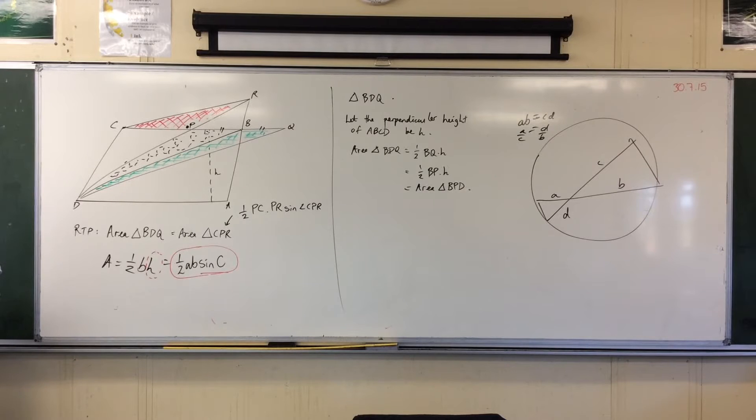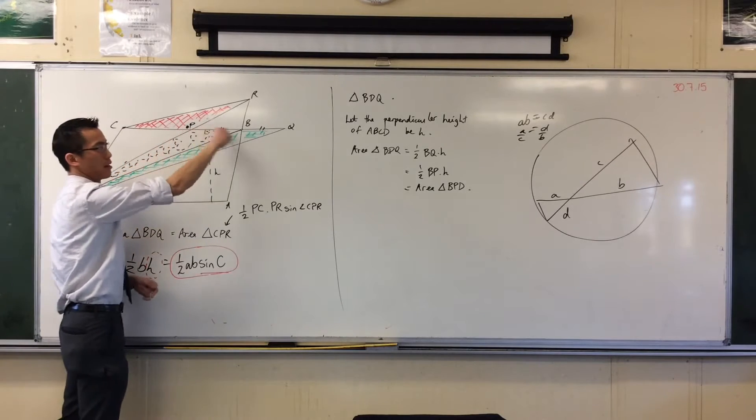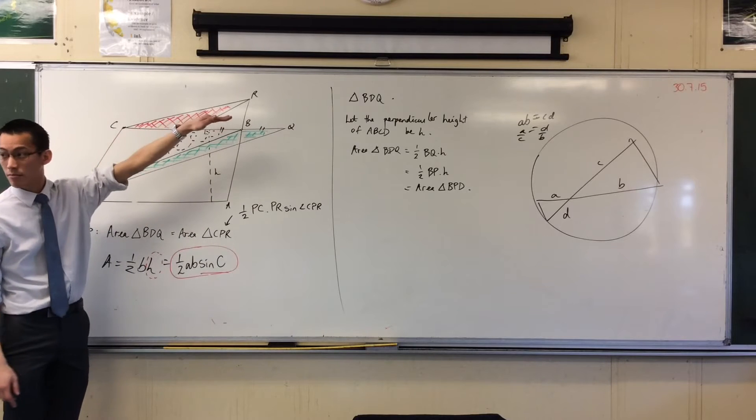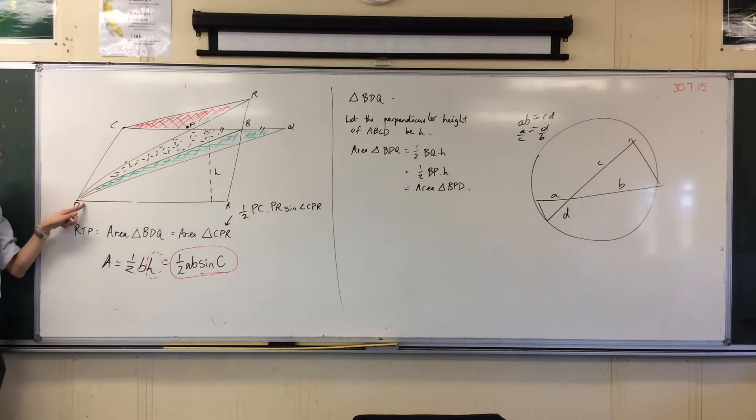How does the parallelogram's height, perpendicular height, is exactly the same as the triangles' perpendicular height? Because the triangles' bases are both formed off of this line, which is one side of the parallelogram, and the opposite vertex is on the other side of the parallelogram.